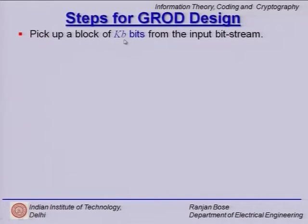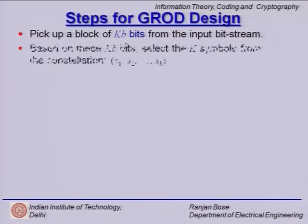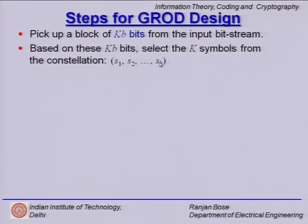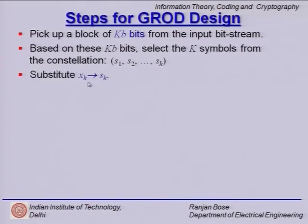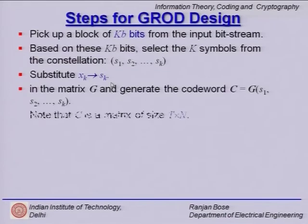Remember the constellation has 2^b points. Based on these k·b bits, select k symbols from the constellation: the first b bits are used to pick up S1, the second b bits to pick up S2, and the last b bits to pick up Sk. We now have S1, S2, ..., Sk symbols mapped from the k·b bits. From the generator matrix for the space time block code, substitute Sk for xk to generate the code word as the generator matrix consisting of S1, S2, ..., Sk.